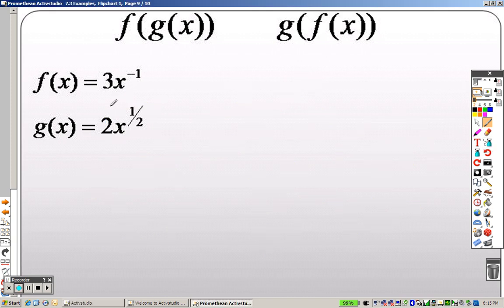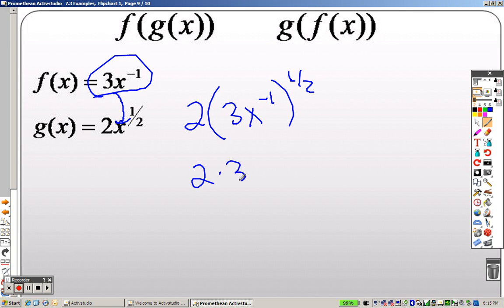With the next one, this is saying take f of x and plug that in for x. So we get 2, or sorry, plug that in the g of x. 2 times 3x to the negative 1 to the half. So it's like saying 2, 3 to the half, x to the negative 1 half. Well, that's like saying 2 times 3 to the half over x to the 1 half.